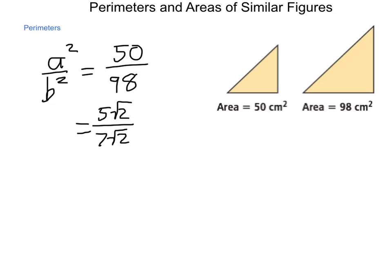Simplifying the fraction, since each part has a square root of 2, my end ratio is 5 to 7. So the ratio of the perimeters will be equal to the simplified form of the square roots, just as a reminder, square roots is how I did this, of each of those individual areas.